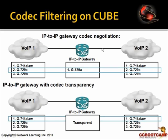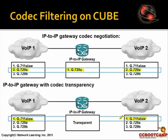Codec filtering allows codec negotiation through CUBE. You can negotiate G729 from the left side through the IP-to-IP gateway and connect G729 on the other side. Alternatively, you can put the gateway in transparent mode where it transparently accepts whatever codec the two end devices negotiate, without being involved in the negotiation process. Codec filtering is configured per dial peer, so you can choose which solution you want on a dial-peer-by-dial-peer basis.